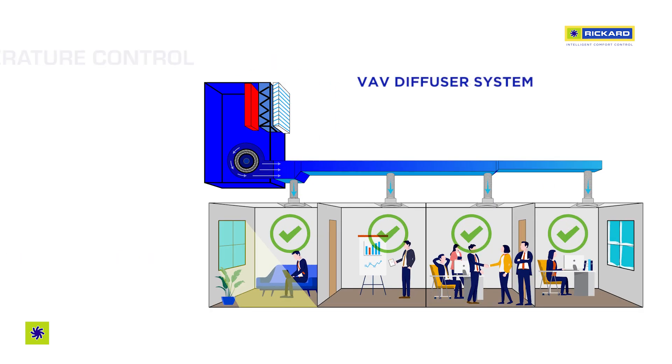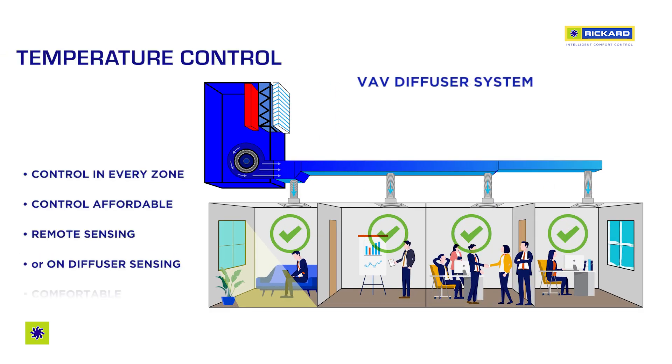Alternatively, VAV diffusers make it cheaper to create more control zones, thereby giving individual temperature control to more people and improving productivity levels.